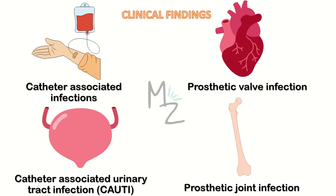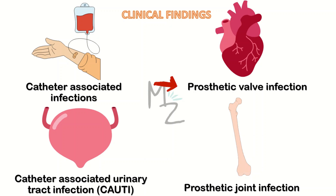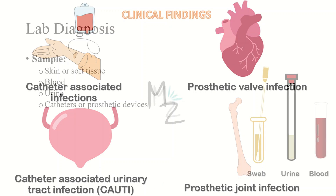Clinical findings: Staphylococcus epidermidis is responsible for causing catheter-associated infections. Catheter-associated urinary tract infection (CAUTI) is quite common. It also causes prosthetic valve infections and prosthetic joint infections — the hip joint is most commonly involved.